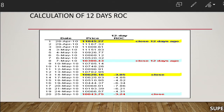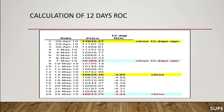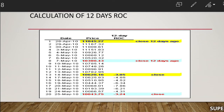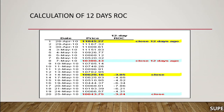Likewise, for 17th May, the 12-day ROC is calculated as: 10,625.83 divided by 11,167.32, minus 1, into 100, which equals minus 4.85. For 25th May, the calculation is 10,043.75 divided by 10,380.43, minus 1, into 100, which equals minus 3.24.